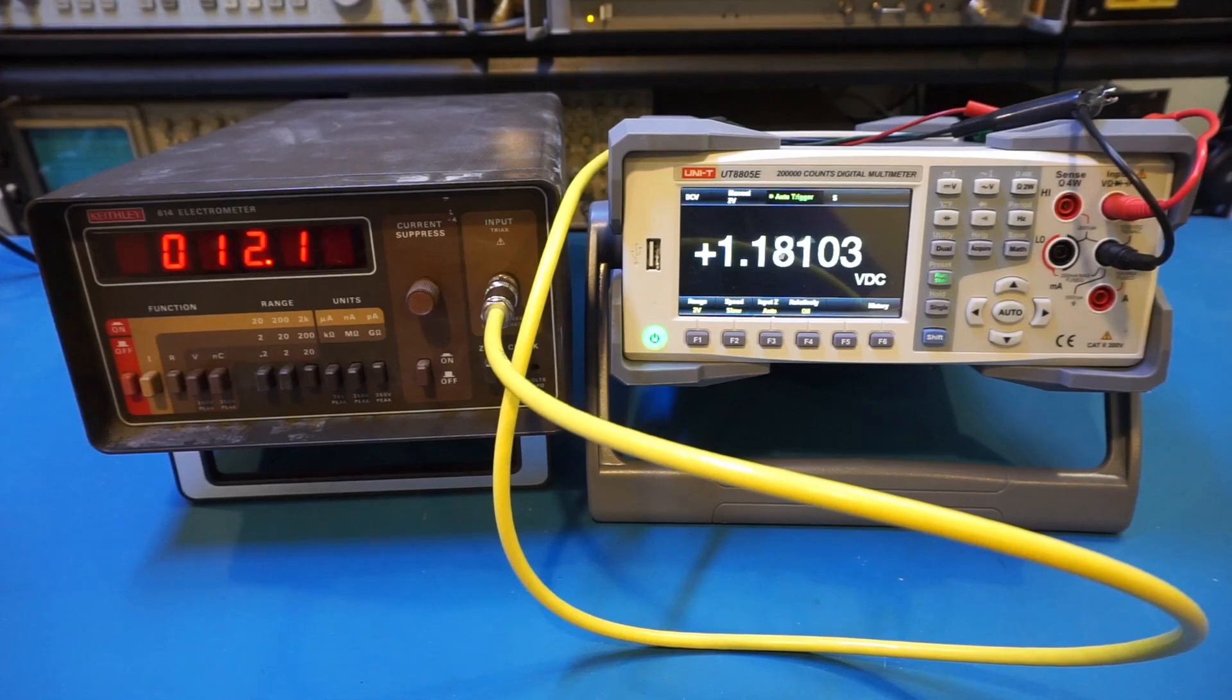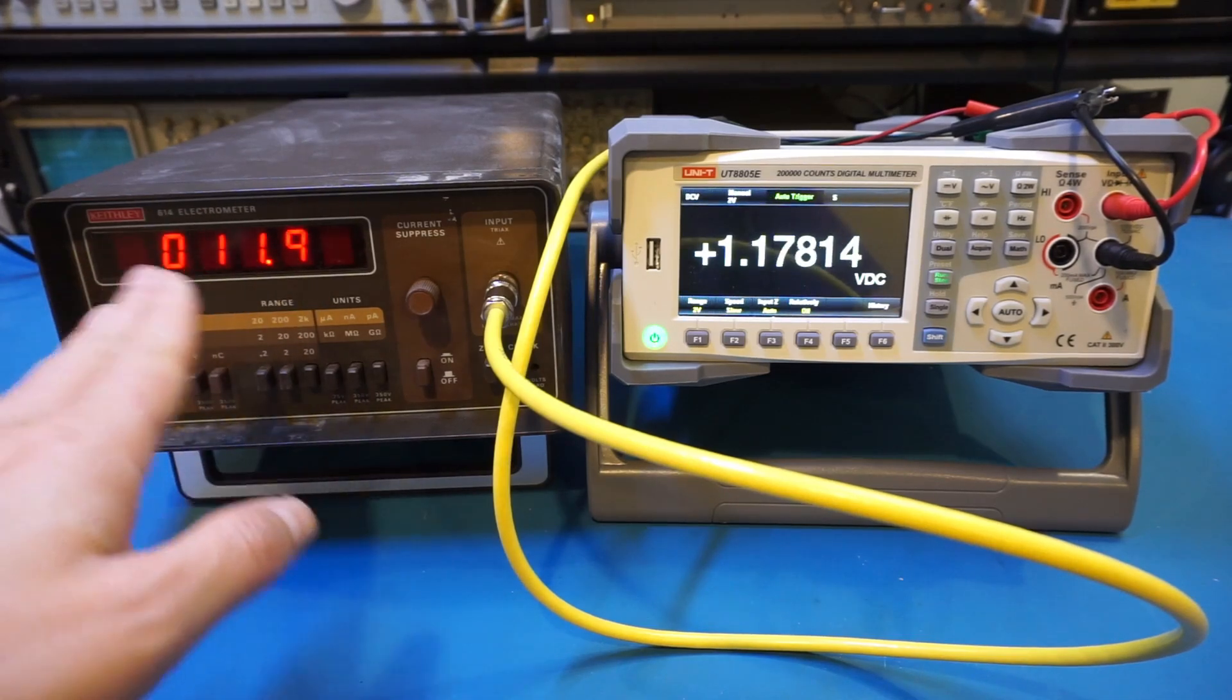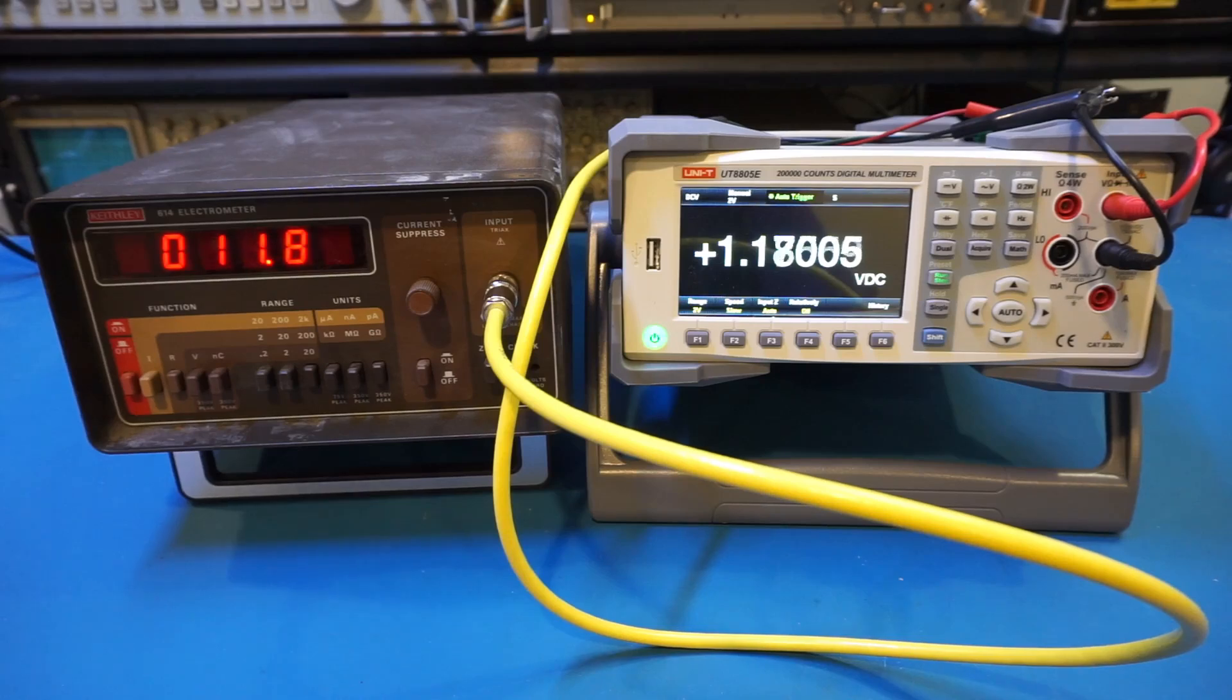And right now you can see the reading is hovering about 11 to 12 gigaohms. So you can see that indeed the input impedance we are measuring here is greater than 10 gigaohms, sitting at right around 12 gigaohms for the input range of 2 volts.